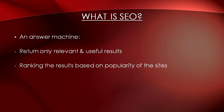So how does SEO work? Search engines are answer machines. When a person searches on the internet, the search engine goes through billions of documents in its database and performs two things. Firstly, it returns results that are only relevant or useful to what the person searched for. Secondly, it ranks those results according to the popularity of the websites providing the information. This means that SEO will determine the relevance and popularity of your website.